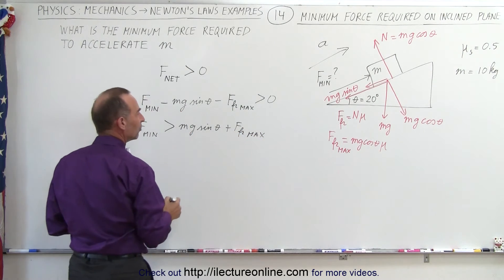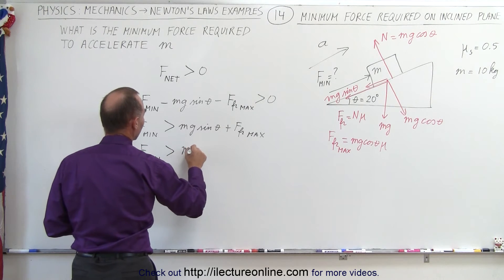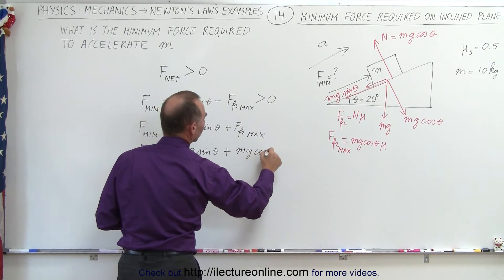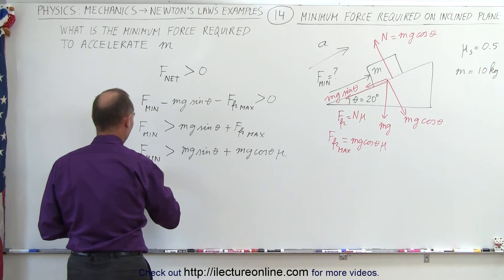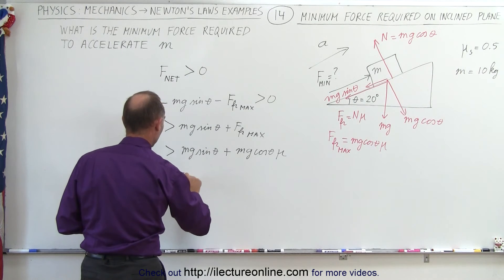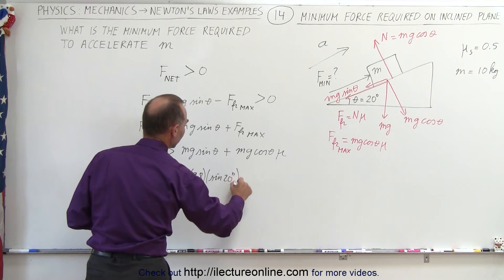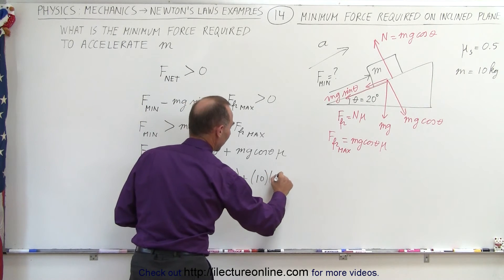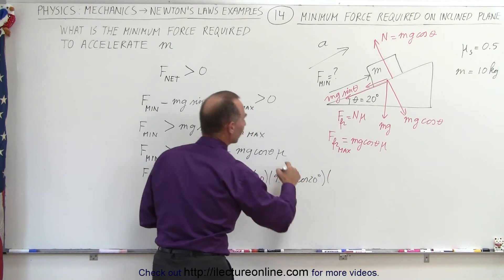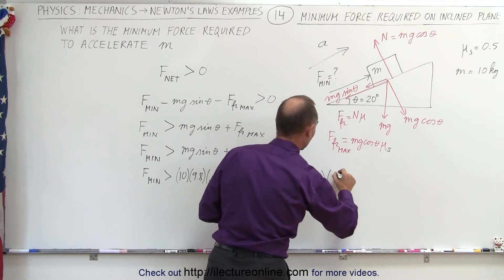That means F min must be greater than mg sine theta plus the maximum friction force. The maximum friction force is mg cosine theta times mu, so the minimum force required must be greater than mg sine theta plus mg cosine theta times mu. Substituting values: the mass is 10 kilograms, g is 9.8 meters per second squared, sine of 20 degrees, plus 10 kilograms times 9.8 times cosine of 20 degrees, times mu sub s, which equals 0.5.